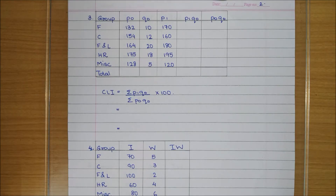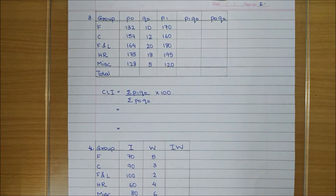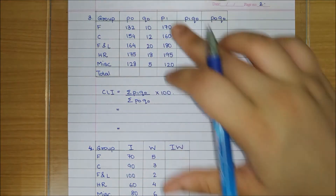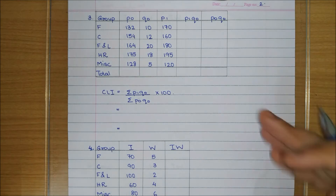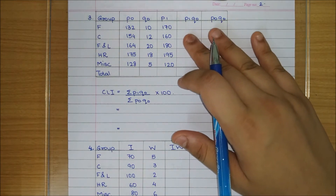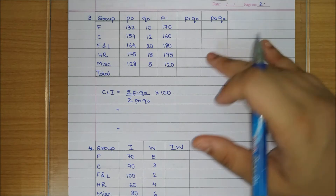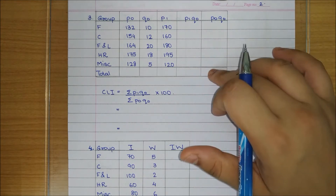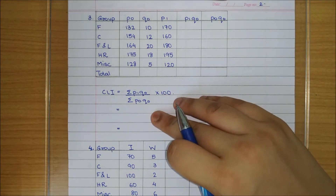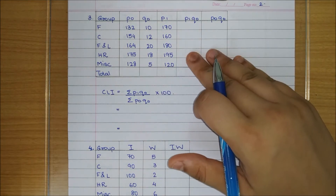Let's start the third question. We are given again the same 5 groups with P0, Q0, and P1. The same procedure applies: calculate P1·Q0 and P0·Q0, find the totals, and put them in the formula. Let us find these columns first.